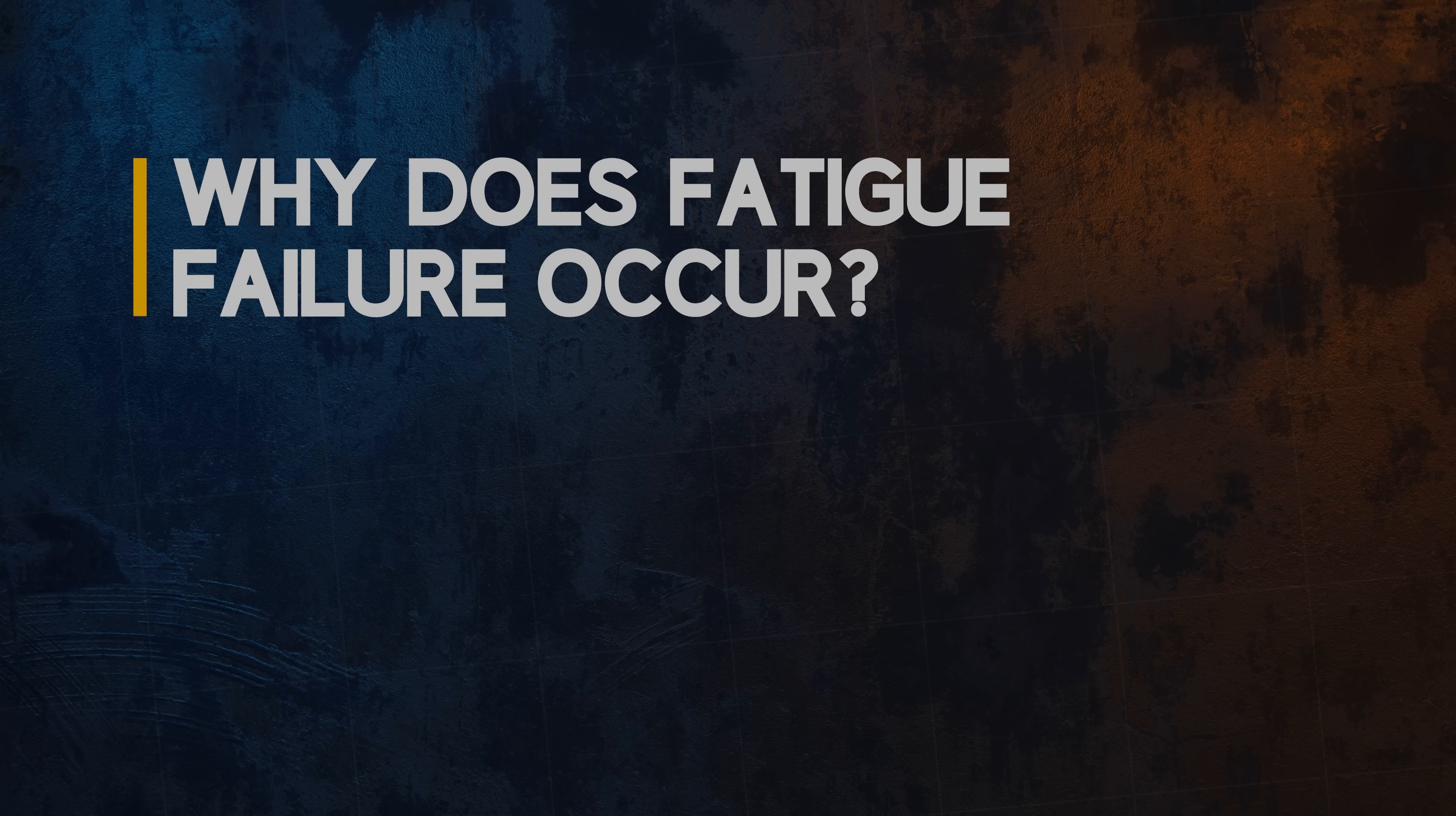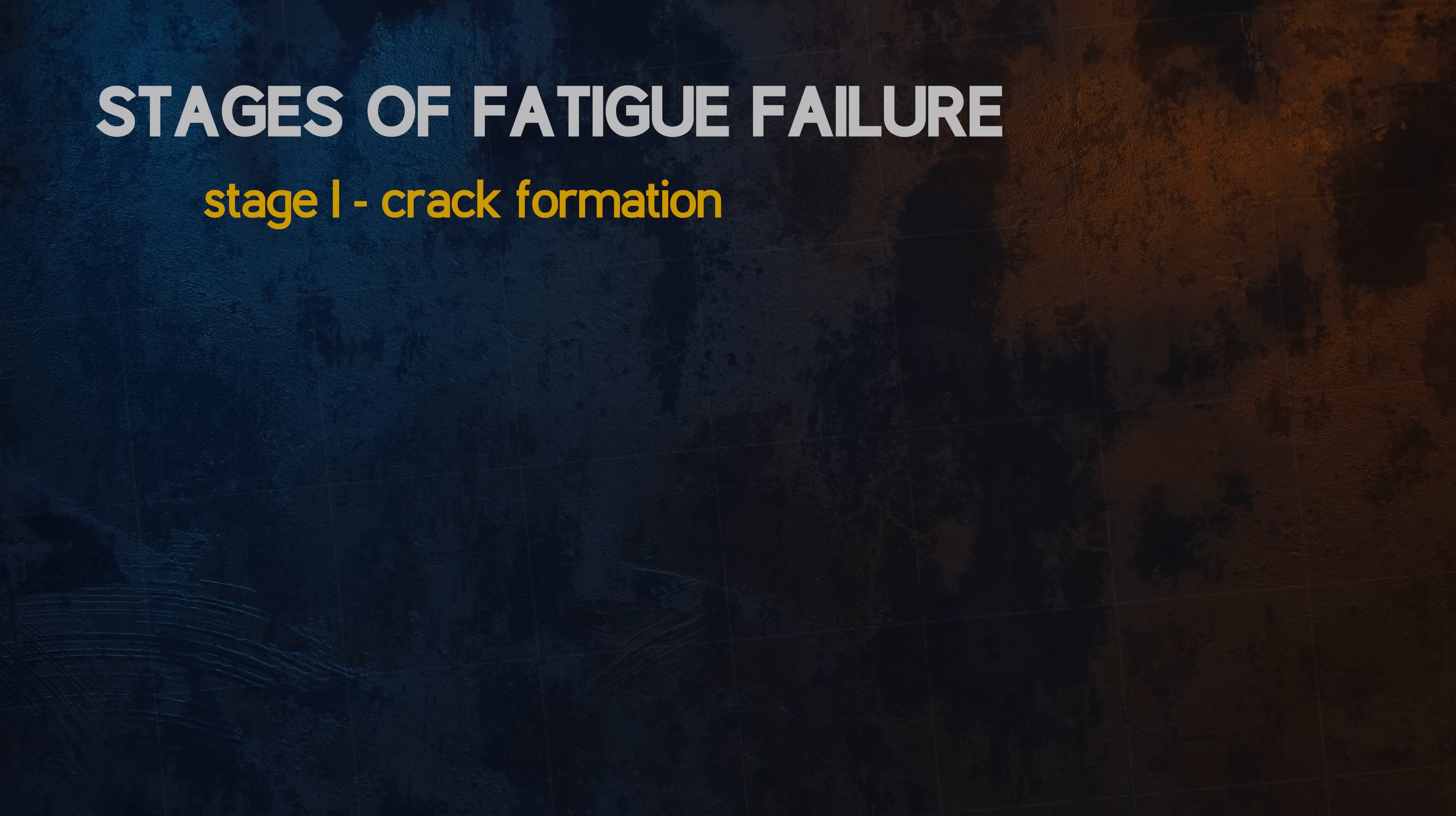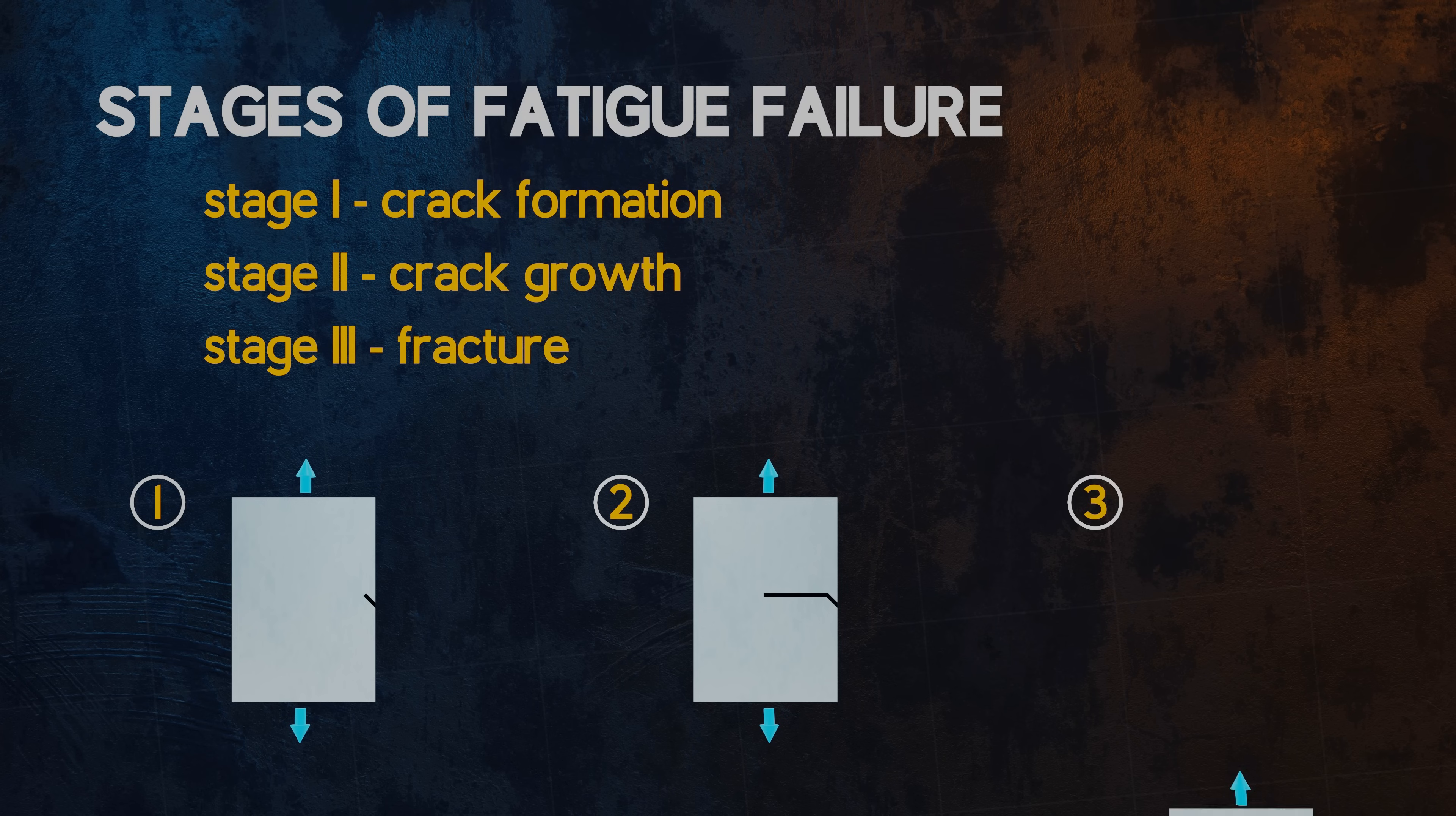Fatigue failure occurs due to the formation and propagation of cracks. It is a three-stage process. The first stage is crack formation, which usually occurs at free surfaces and at stress concentrations. In stage two, the crack grows in size. And in stage three, after the crack has grown to a critical size, fracture occurs.